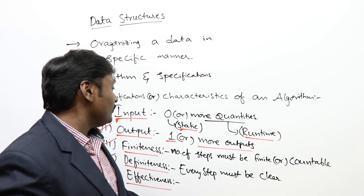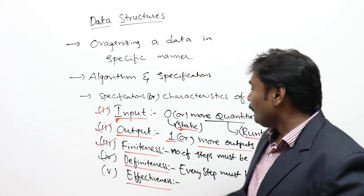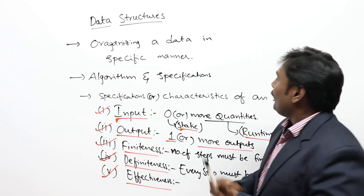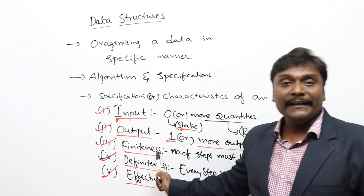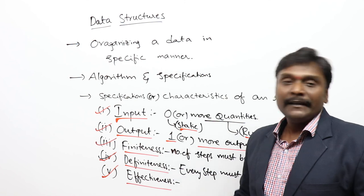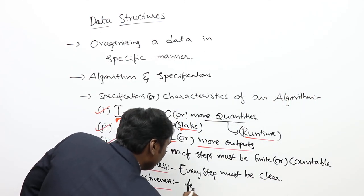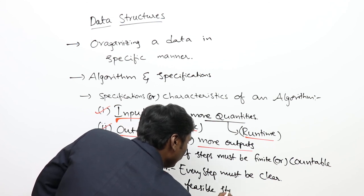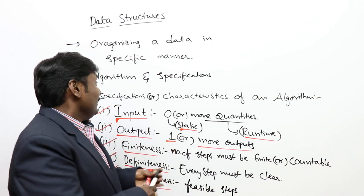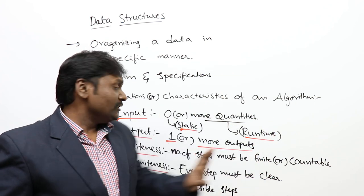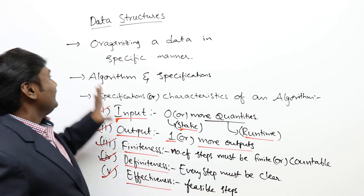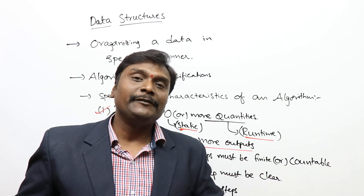The fifth characteristic is effectiveness. Effectiveness means every step must be clear and represented in the easiest manner — that is the effectiveness of an algorithm. All steps must be feasible and clear. So the five characteristics of an algorithm are: input, output, finiteness, definiteness, and effectiveness. This concludes the introduction to algorithm and its specifications.